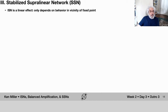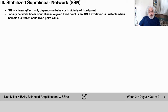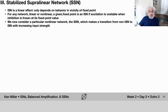The third topic is what we call the stabilized superlinear network, or SSN. The ISN is a linear effect - it only depends on behavior in the vicinity of the fixed point. For any network, a given fixed point is an ISN if excitation is unstable when inhibition is frozen at its fixed-point value. Now we look at a particular nonlinear network, the SSN, which makes a transition from being a non-ISN for very weak input to being an ISN for stronger input.